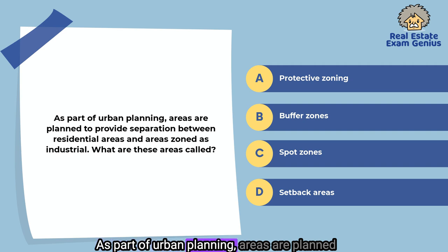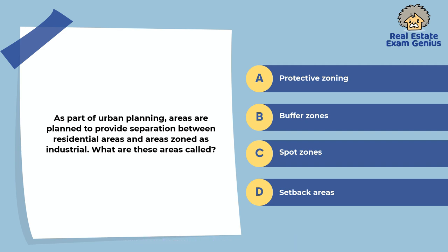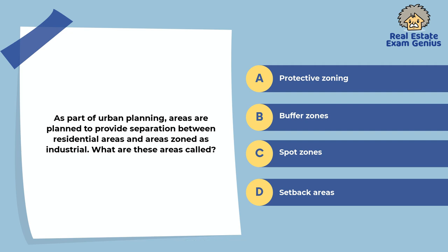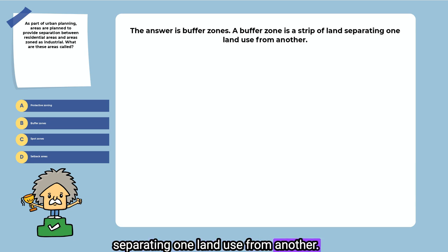As part of urban planning, areas are planned to provide separation between residential areas and areas zoned as industrial. What are these areas called? Protective zoning, buffer zones, spot zones, or setback areas. The answer is buffer zones. A buffer zone is a strip of land separating one land use from another.